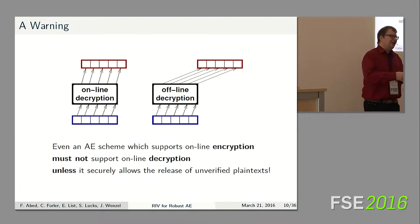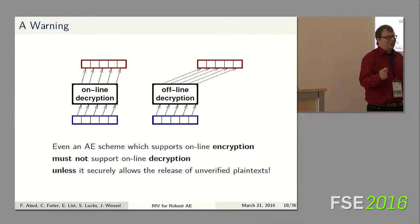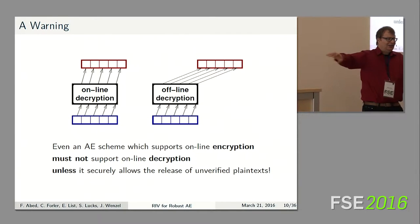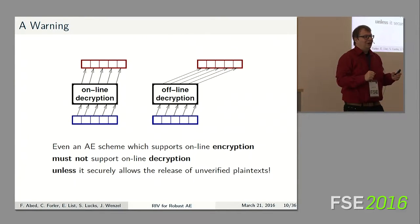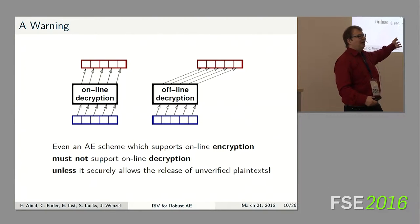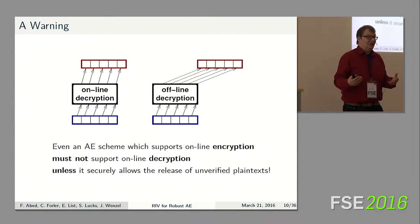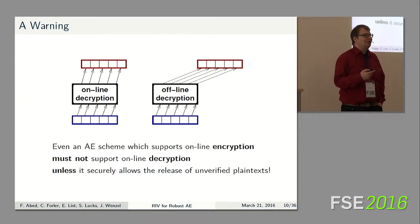One more warning about online schemes. When you have an online encryption scheme — reading plaintext bytes and emitting ciphertext bytes before reading the entire message — you might expect to do the reverse during decryption: read a few ciphertext bits and start emitting plaintext bits before reading the entire ciphertext. Of course, doing so violates your security contract because you are releasing unverified plaintexts. You should never do this unless your scheme is specifically designed to be secure under the release of unverified plaintexts.